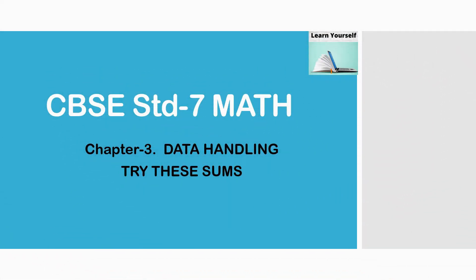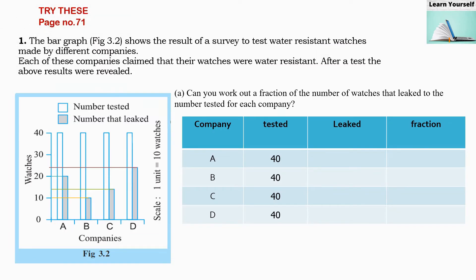Welcome to Learn Yourself. Try this sum from page number 71. This is the first question and it says that the bar graph figure 3.2, which I have shown you here, shows the result of a survey to test water resistance watches made by different companies.